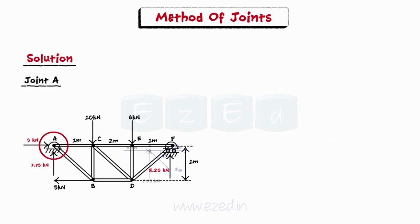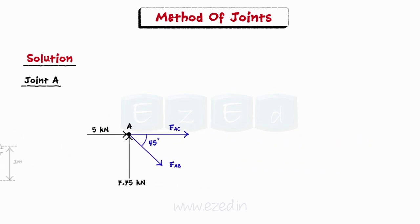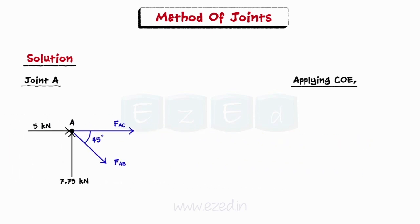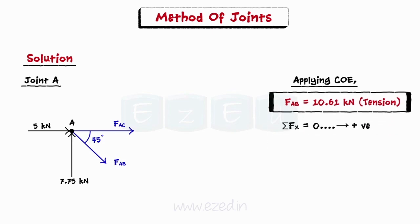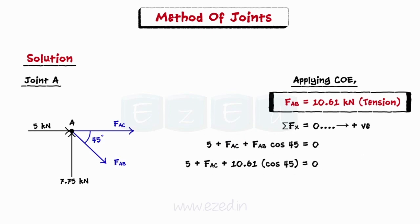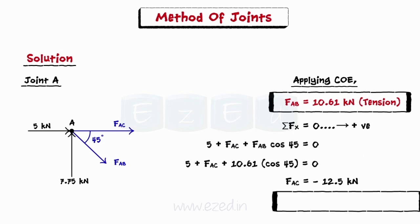We will first isolate joint A as there are only two unknown members AB and AC. We initially assume the members to be in tension and apply conditions of equilibrium to joint A. Equating the summation of all forces in the y direction to zero, we find the force in member AB as 10.61 kN, tensile in nature. Then, equating the summation of all forces in the x direction to zero, the force in member AC is 12.5 kN, compressive in nature.